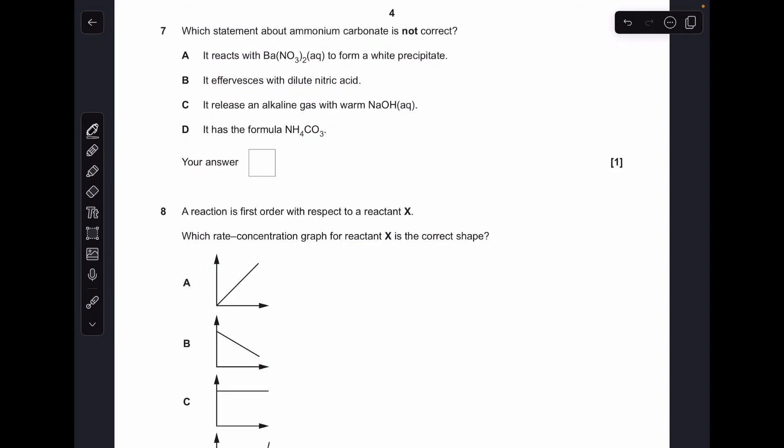Moving on to question 7. So which is the incorrect statement about ammonium carbonates? We'll just run through them. It reacts with barium nitrate to form a white precipitate. Yes, it would because the carbonate ions combine with the barium ions and form a precipitate. So that is actually correct. I'll just put a tick there. It effervesces with dilute nitric acid. Yeah, carbonates do react with acid and form CO2. So you see effervescence, fizzing. Would it release an alkaline gas with warm sodium hydroxide? Yes, it would because that's the test for an ammonium ion. It releases alkaline ammonia. So it's got to be D. Well, it is D because the formula of ammonium carbonate is (NH4)2CO3. So D was the answer.